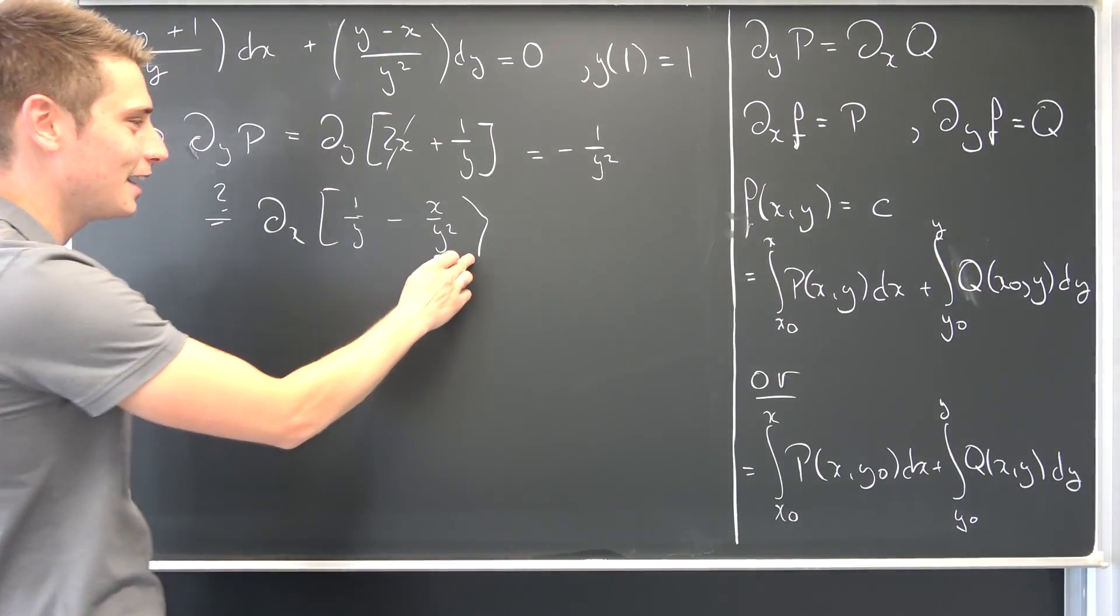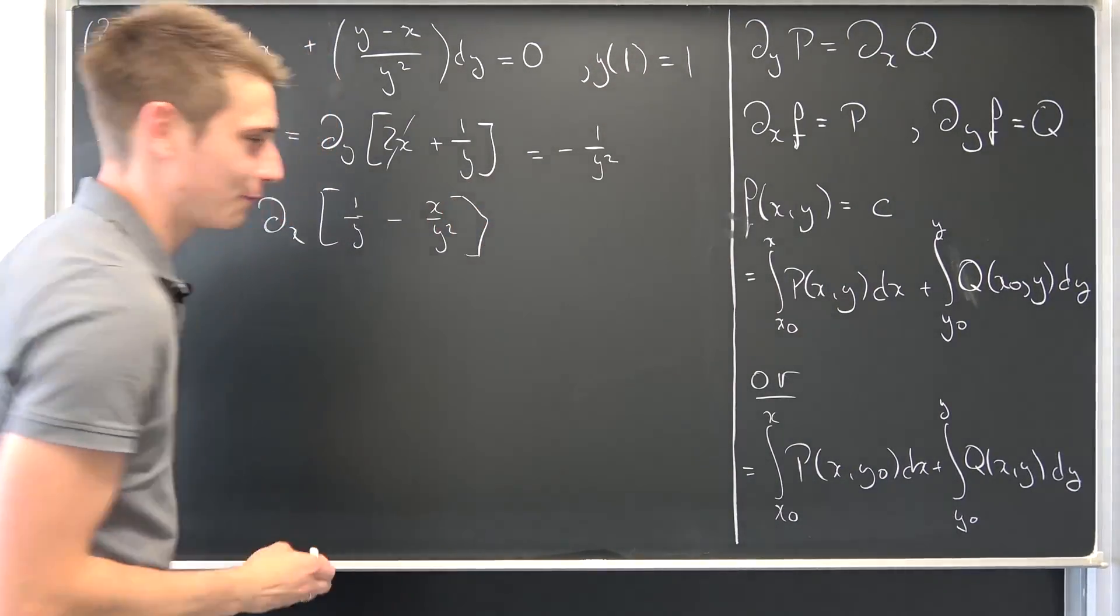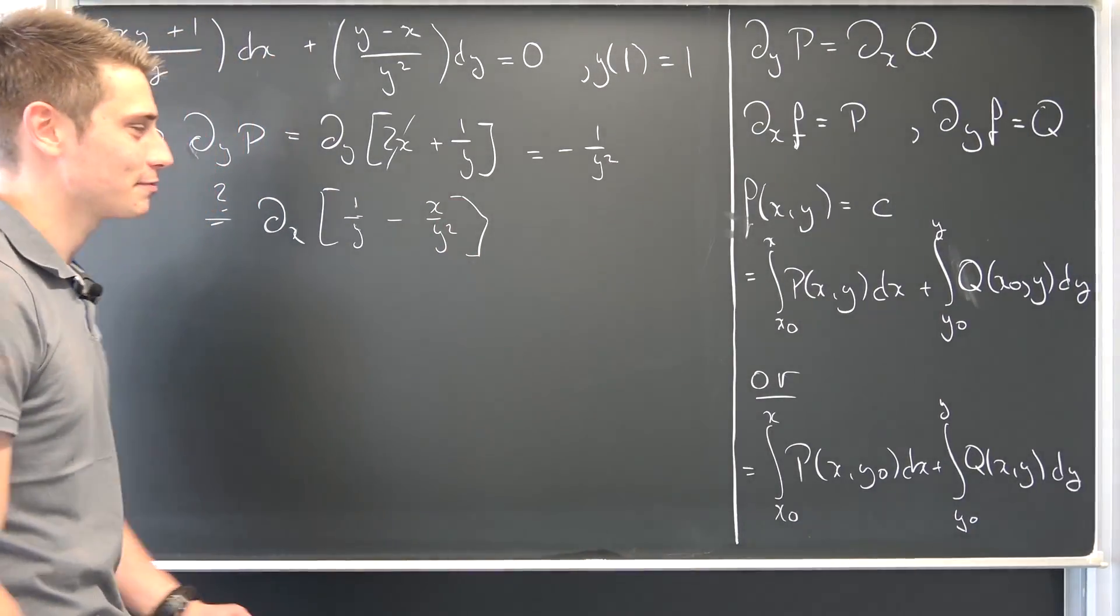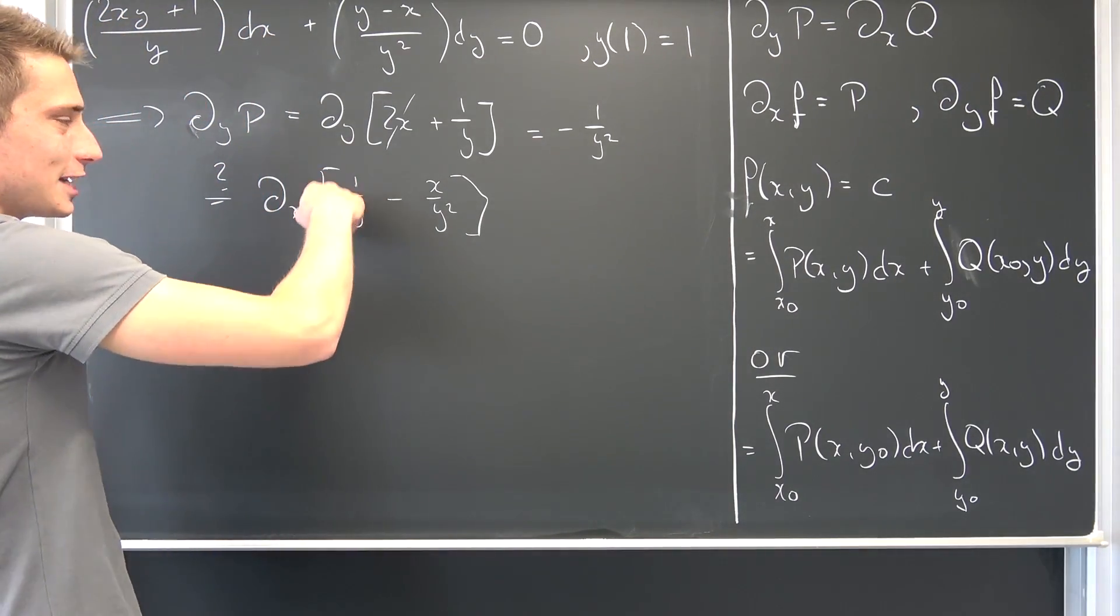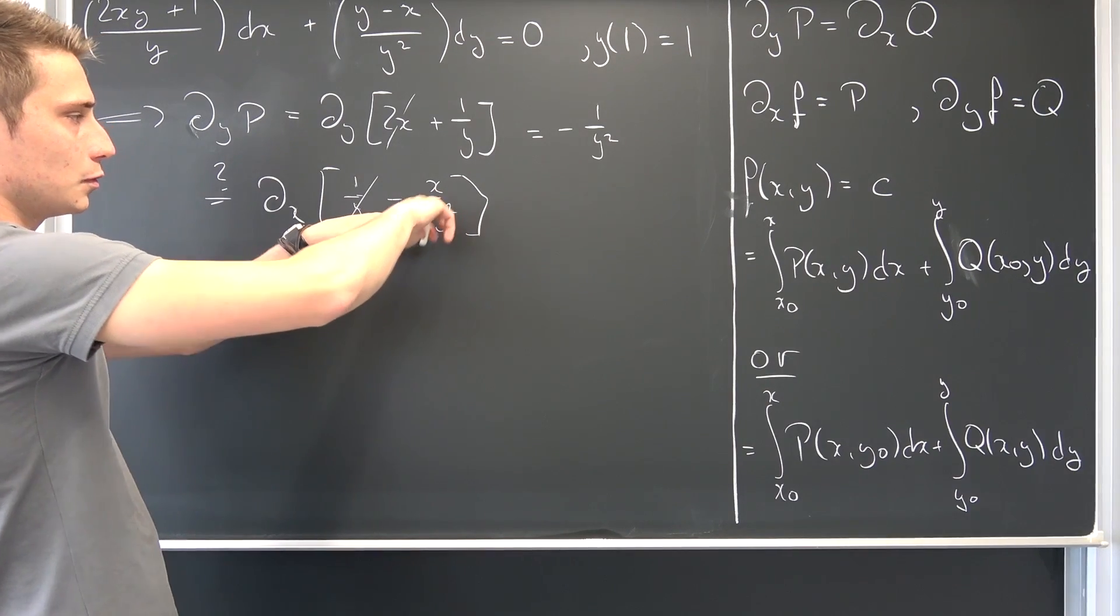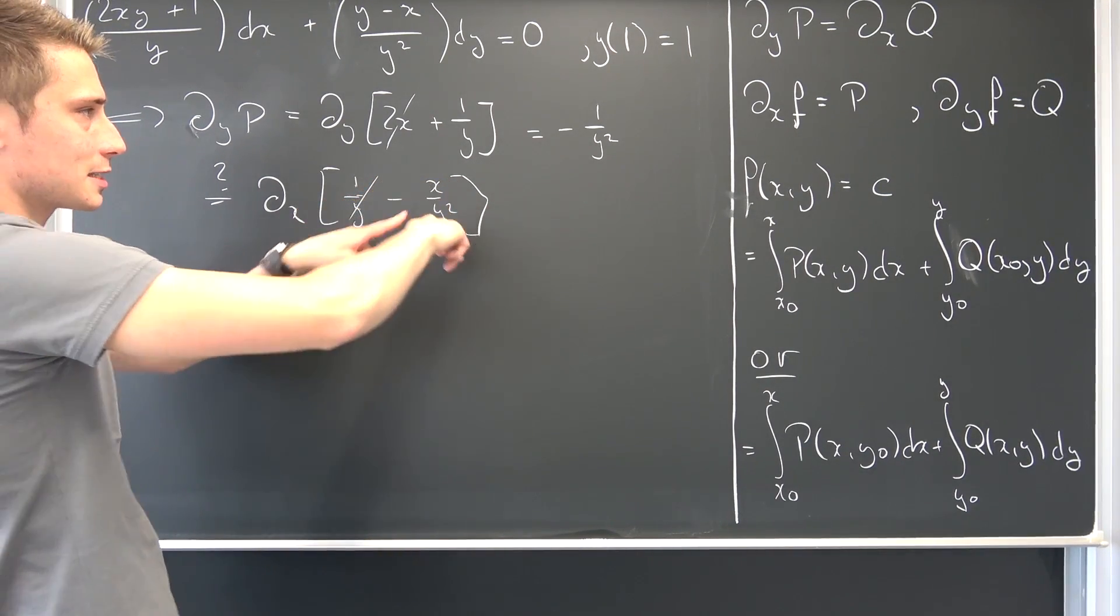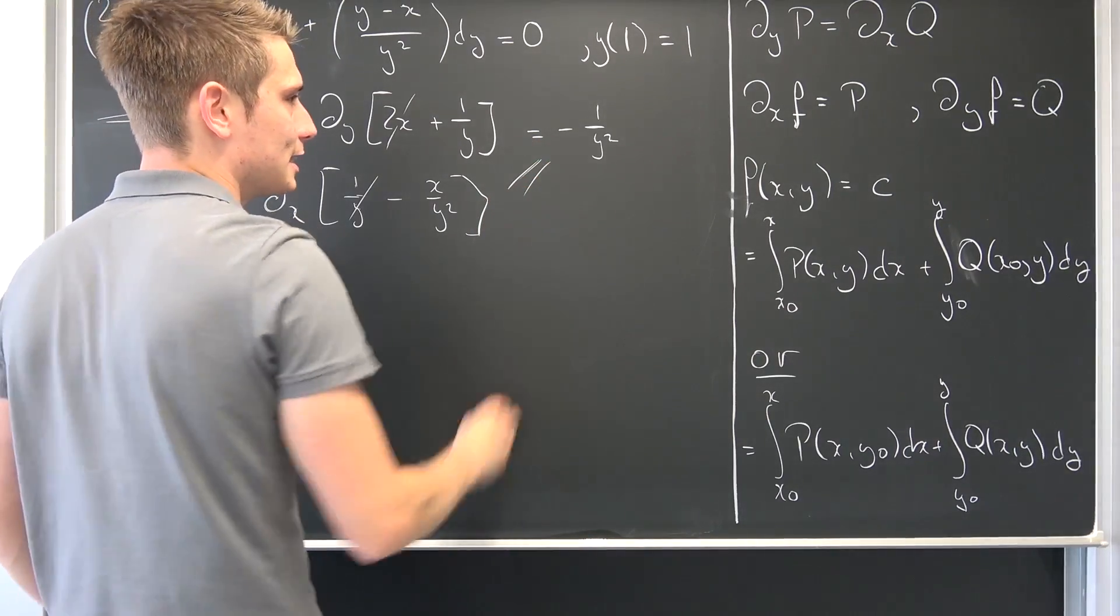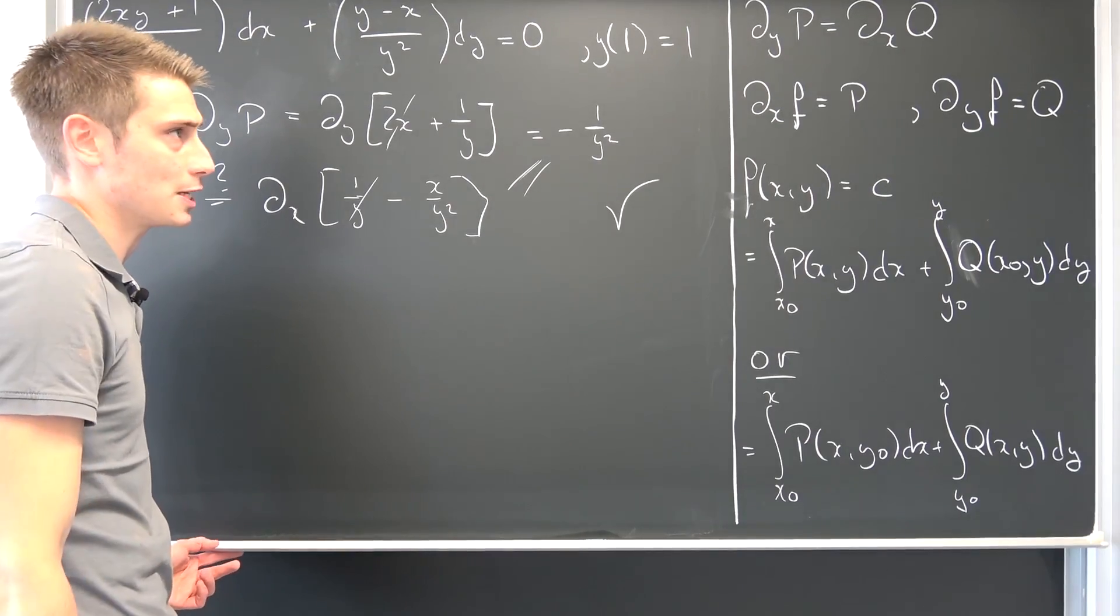Hey, that's pretty good. That's supposed to be a bracket. I'm inventing new kinds of mathematical notation right here. Now differentiating this with respect to x is going to make it vanish, and negative 1 over y squared is just a constant, so we can differentiate x simply. So those two are indeed equal, and thus this thing is an exact differential equation.